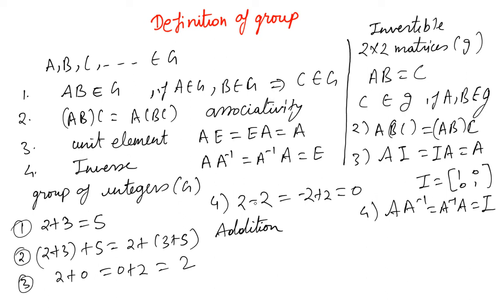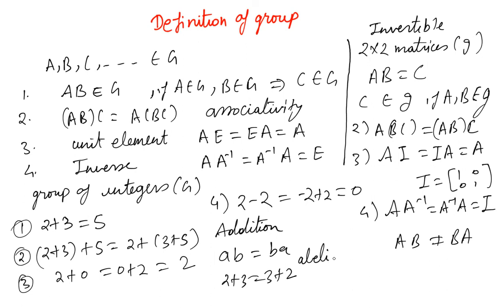There is one more thing to note about these two types of groups. In the integer example, a·b equals b·a — for instance, 2+3 equals 3+2 — but this is not true for matrices, where AB is generally not equal to BA. Groups where the operation commutes are called abelian groups, and those where it does not are called non-abelian groups. Both play an important role in quantum mechanics and quantum field theory.